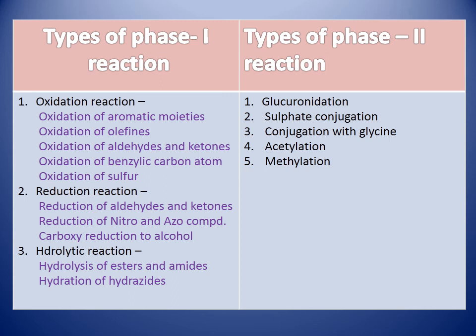Now, what are the different sites for drug metabolism? Liver is the main site for drug metabolism. Kidney, intestine, lungs, adrenal gland, placenta, brain, and skin are also different sites for drug metabolism.